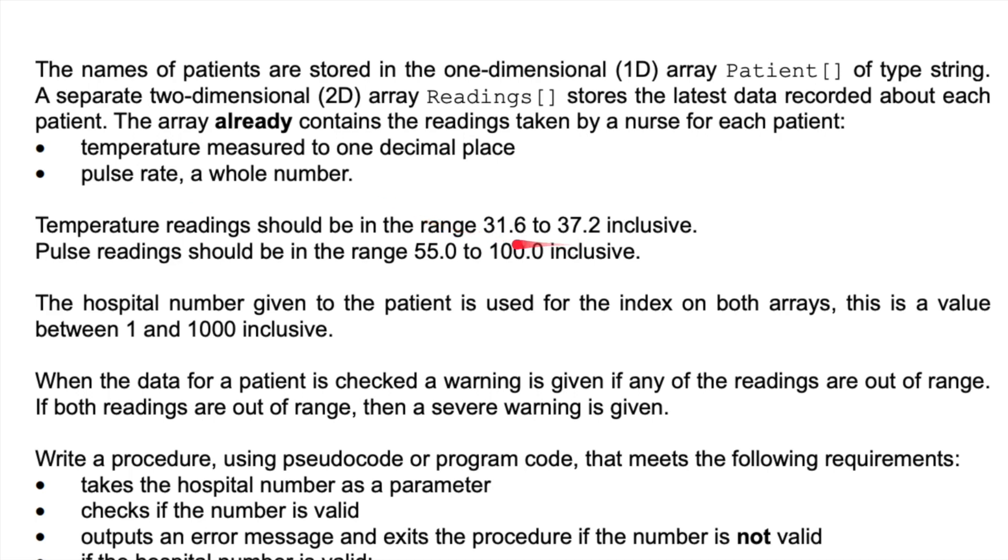We've got some ranges here, maximum and minimum, inclusive range: 31.6 to 37.2 for temperature, and pulse is 55.0 to 100.0. The hospital number given to the patient is used for the index on both arrays. This is a value between one and a thousand inclusive, so we can have a maximum of a thousand patients. When we type in something like patient 15, it will find the 15th patient in the patient array and also find the readings at position 15 in the 2D array. This is a 2D array because it stores two different values: temperature and pulse rate.